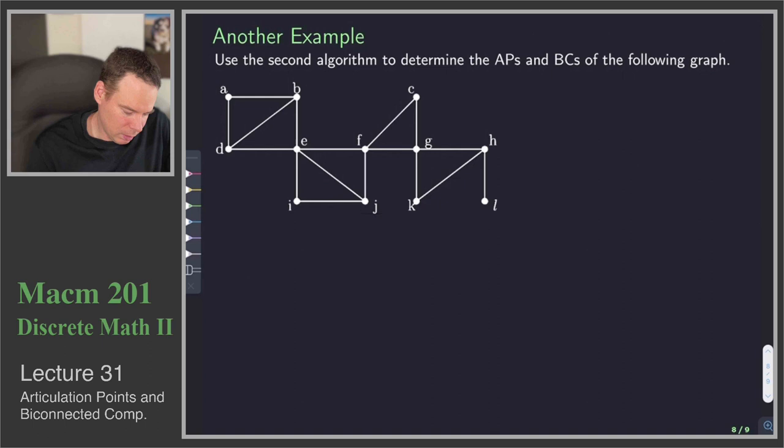So we want to find the APs and the BCs. So we do a DFS spanning tree. We're going to root at... we can pick any root we want, so any one whatsoever.